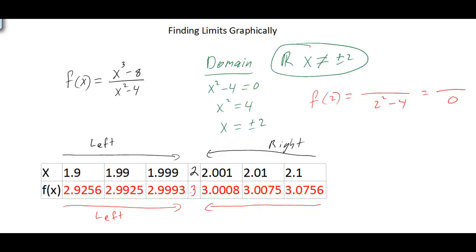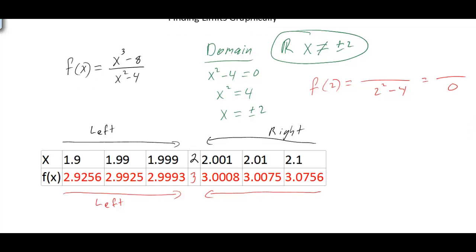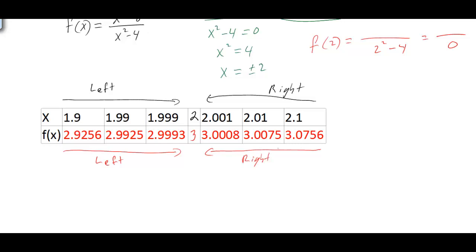What we just found is your very first limit. The limit of x cubed minus 8 divided by x squared minus 4 as x approaches 2. We can't plug 2 in for x because 2 is not part of the domain. But from our table of values, as x gets closer and closer to 2 from both the left and the right, our y value is approaching 3. That's all limits are: what's happening to a function as x gets extremely close to a number.